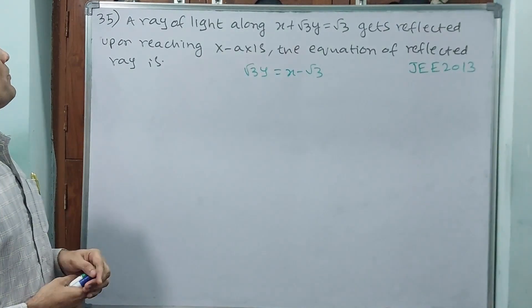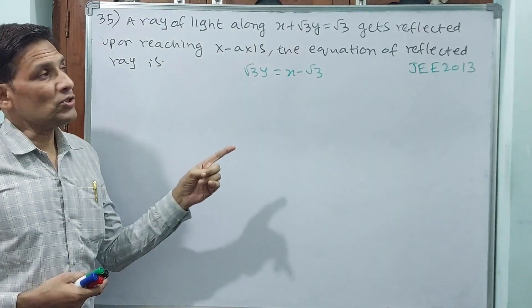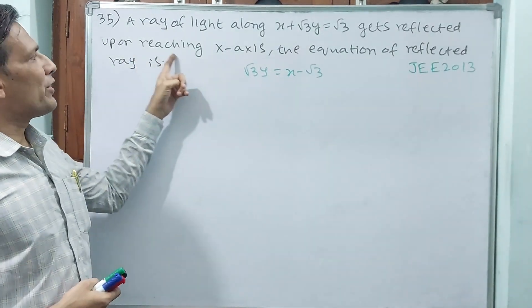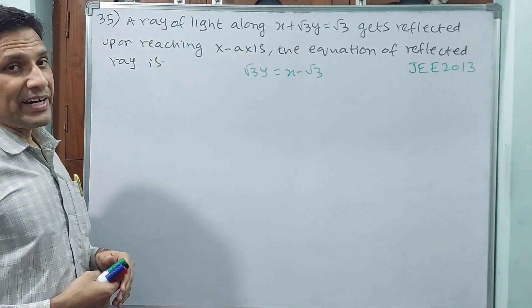Question number 35: A ray of light along x plus root 3y equals root 3 gets reflected upon reaching the x-axis. The equation of the reflected ray is...